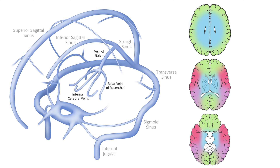Together, these deep veins drain the deep white matter of the frontal, temporal, and parietal lobes, as well as the corpus callosum, the upper brainstem, the basal ganglia, and the thalami.